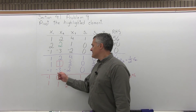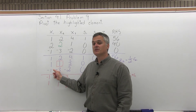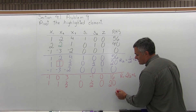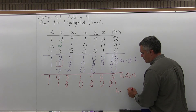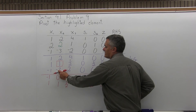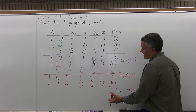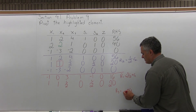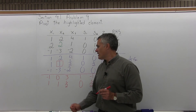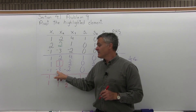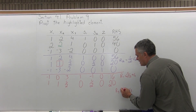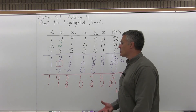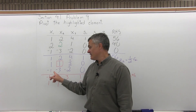Now the last thing I have to do: in the X2 column, there's a negative 3 in the bottom position that must be turned into a 0. To make it a 0, I'm working in row 3, so the equation is row 3 equals positive 3 times row 2 plus the old row 3 — same number, opposite sign as negative 3. I'll apply that equation to every position in row 3.